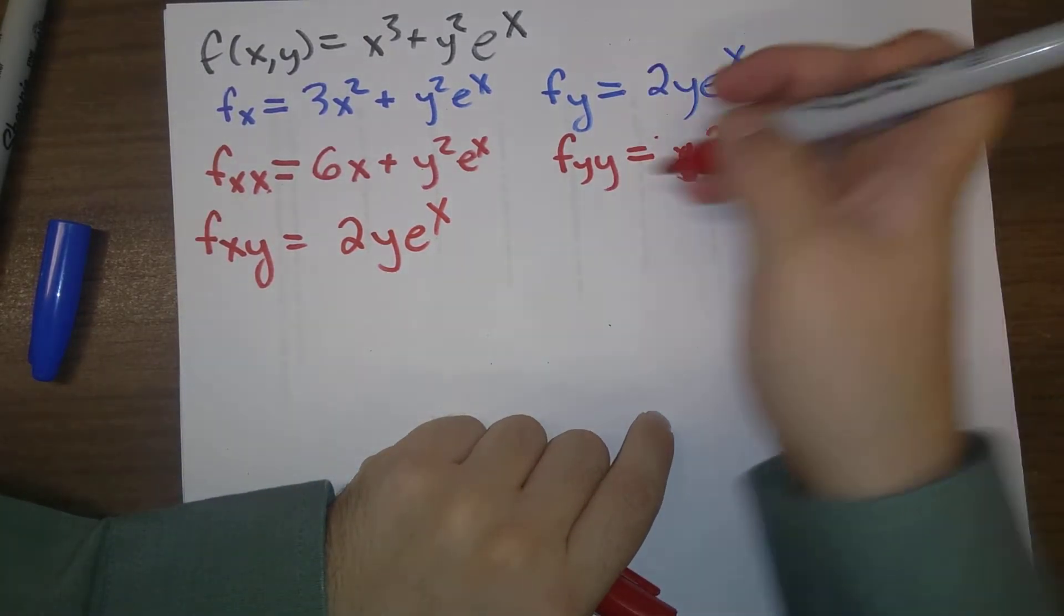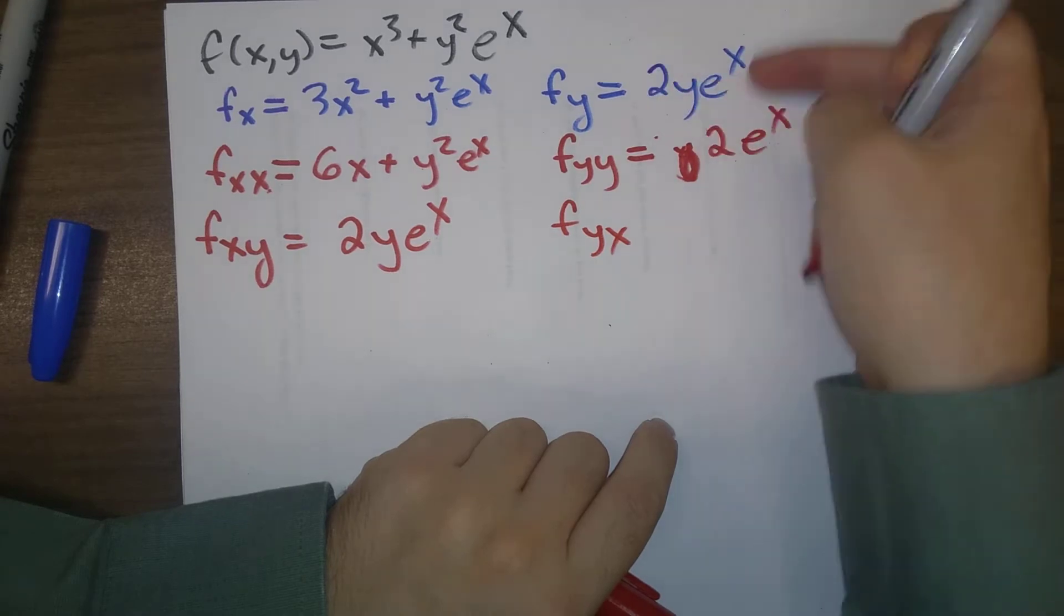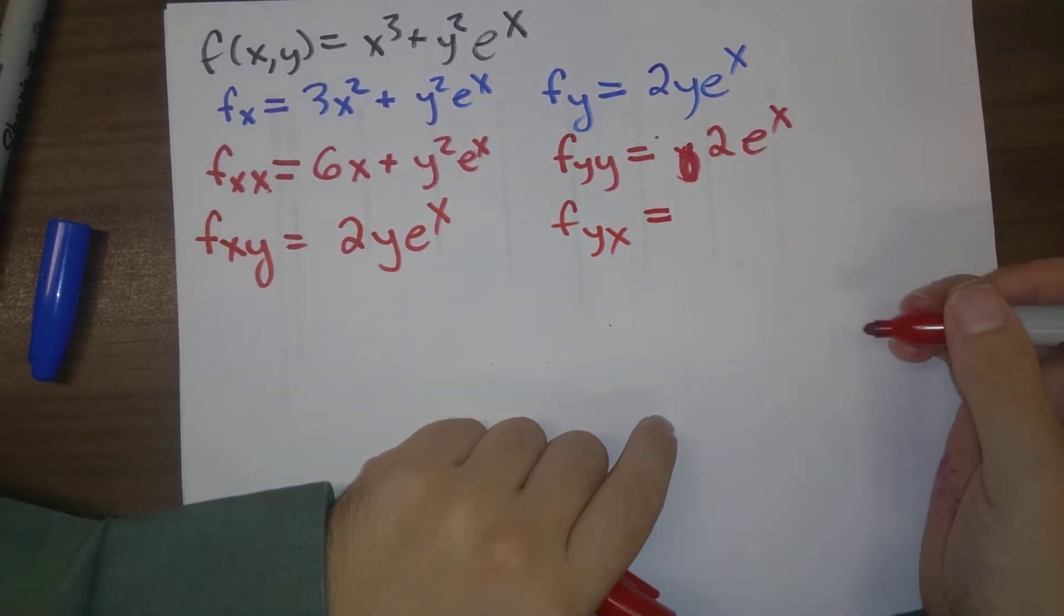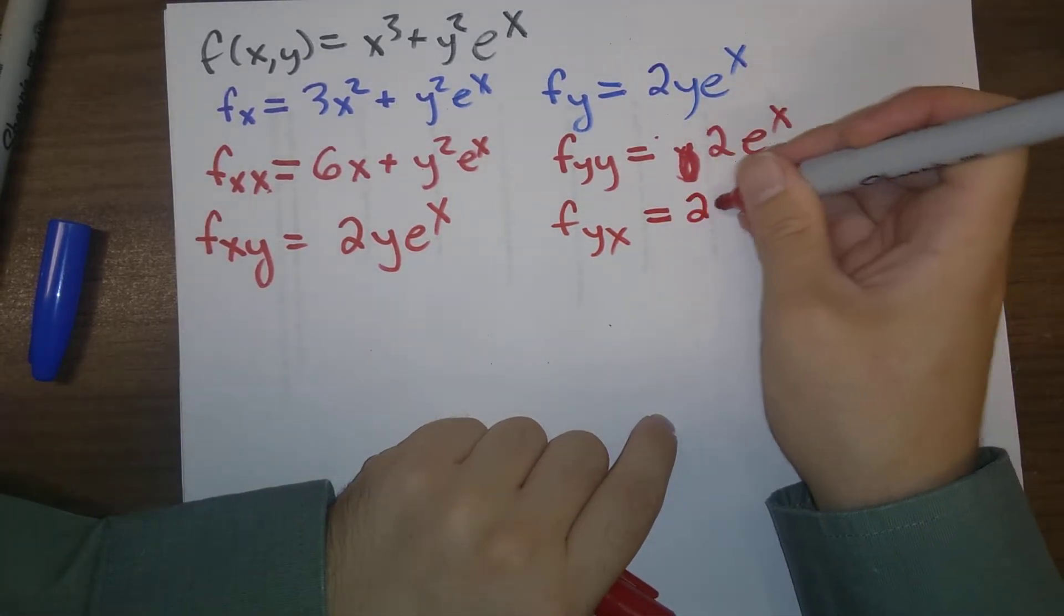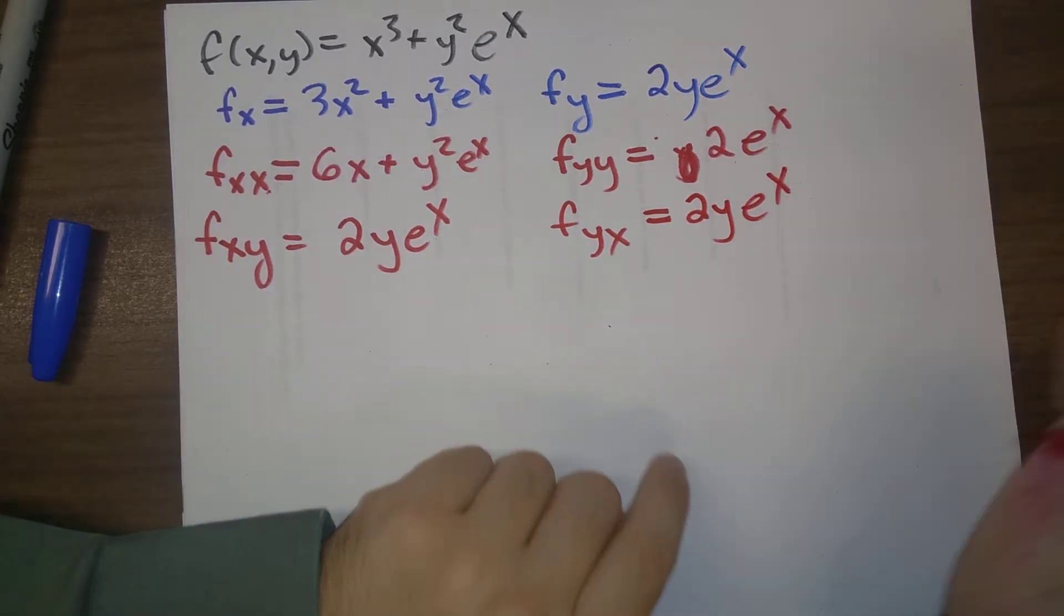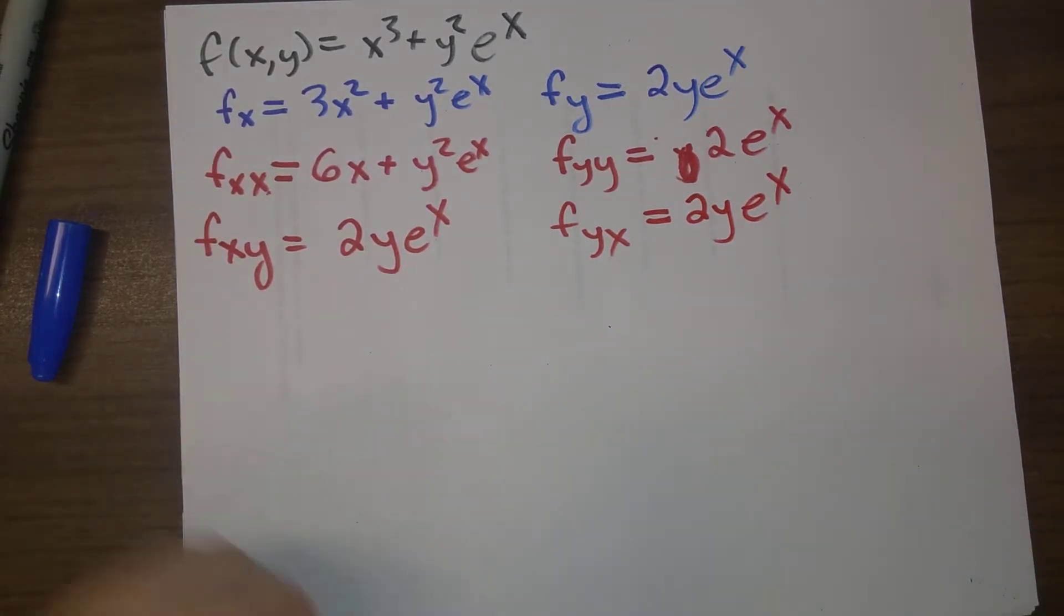And now we want to do f_yx, so now we take the x derivative here, and the x derivative is 2y e^x. It would be good for you to check yourself that you understand where all four of those are coming from.